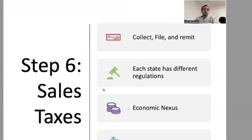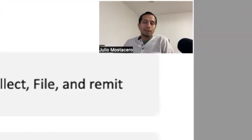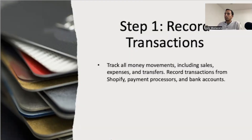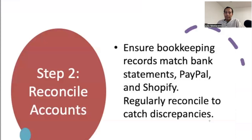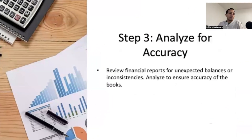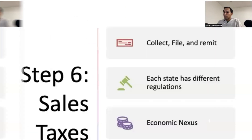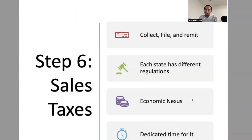Those are the six bookkeeping steps for Shopify stores. Quick recap: record transactions, reconcile all the accounts, analyze for accuracy, correct any errors, close the books, and file your sales taxes. Within each step there are important things to keep in mind and take care of.